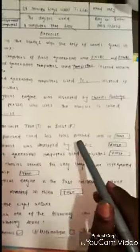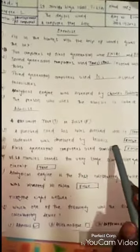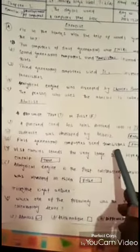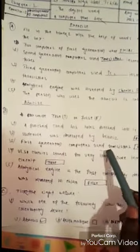So let's go to the next question. Write through T or false F. A punch card has holes punched into it. It's true. And slide rule was developed by Leibniz. It is wrong. So it's false. First generation computer used transistors. It's false. First generation computer used vacuum tubes. So it's false.